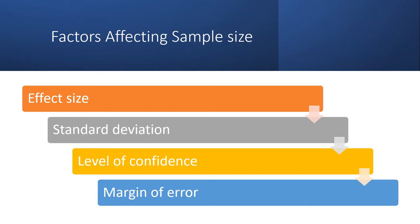This slide speaks about the factors affecting sample size. Sample size is determined based on some factors. The first one is effect size — what insight will be derived from the samples. The second factor is standard deviation, which is the variation from the mean of the population. The third is the level of confidence chosen by the research scholar. And the fourth is margin of error, which may be 1%, 5%, or 10%.